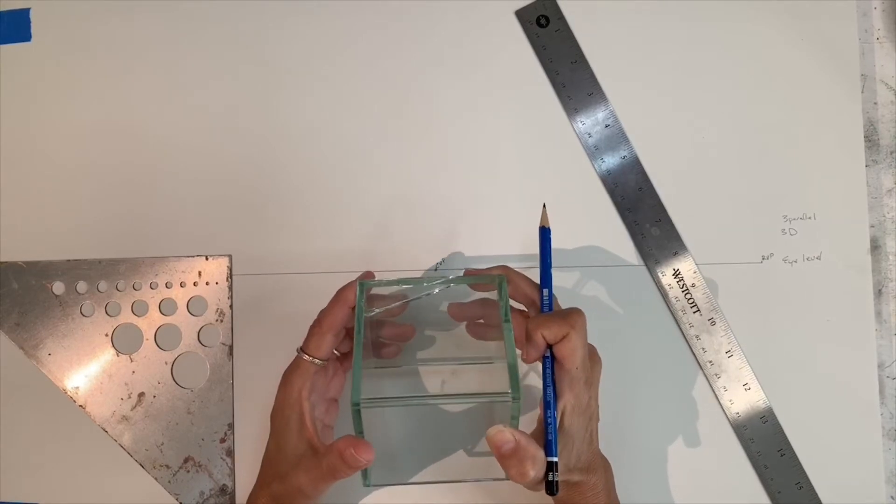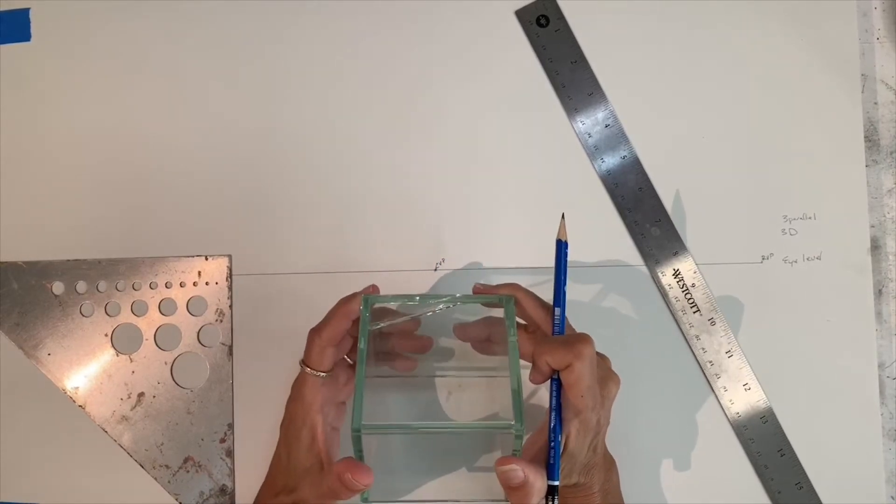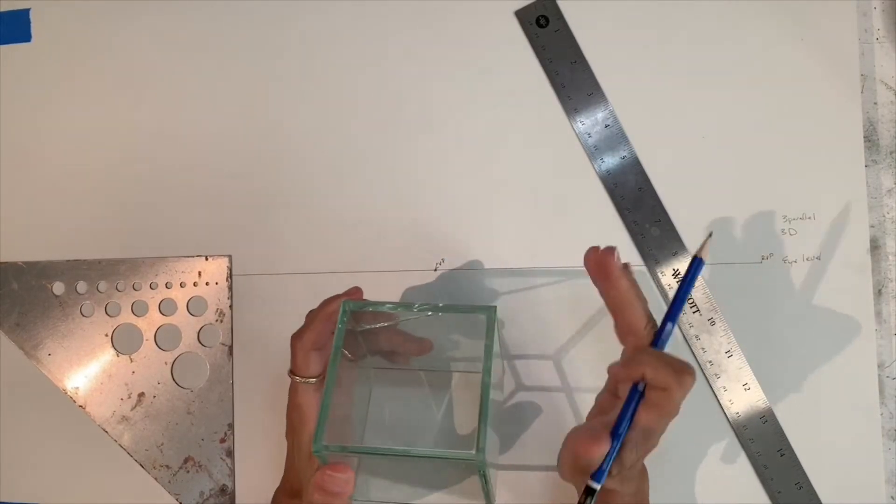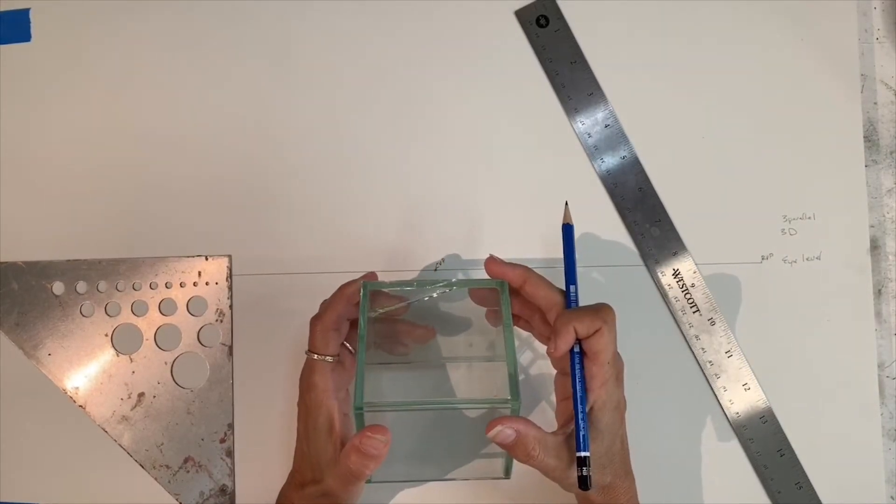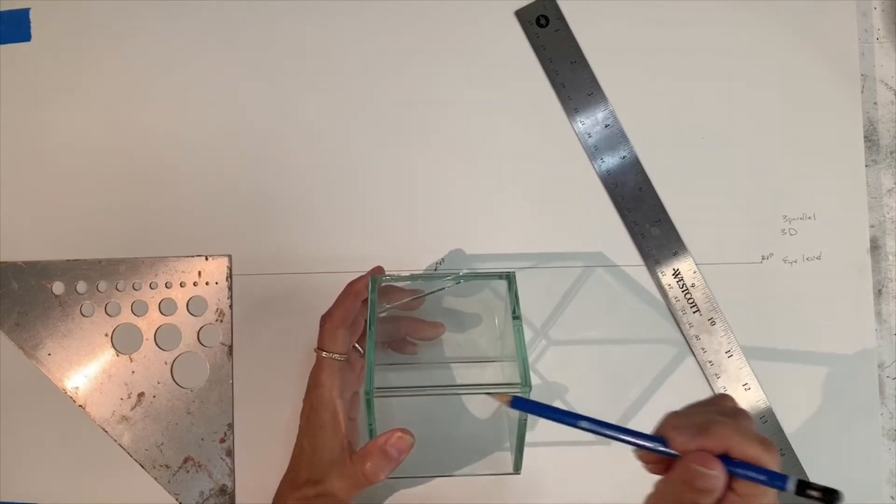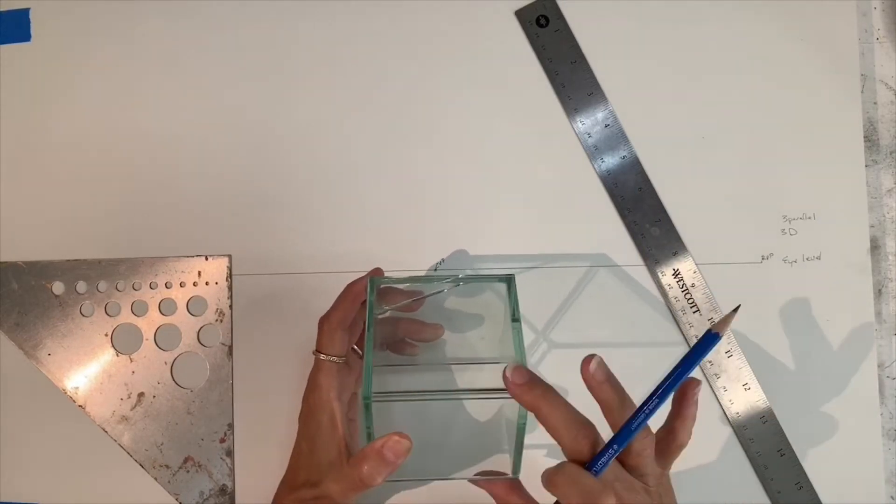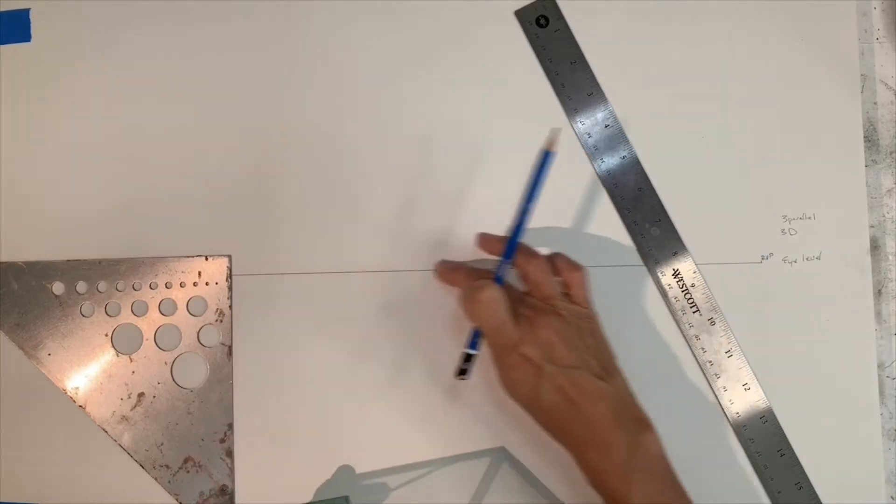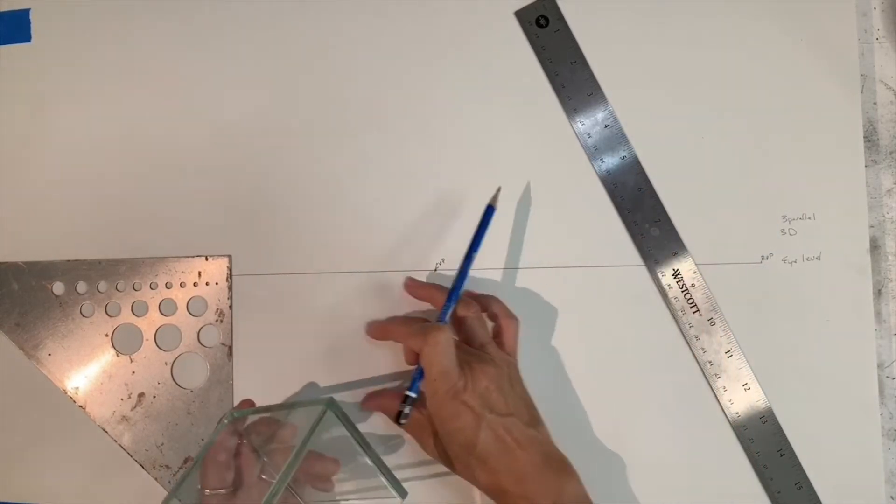And keep your cubes, at least in the beginning, straight. You don't want to be tilting them in space quite yet. That's a little more tricky. And the others, your top and bottom for your length, which are also parallel, keep those parallel to your horizon line. So straight across.